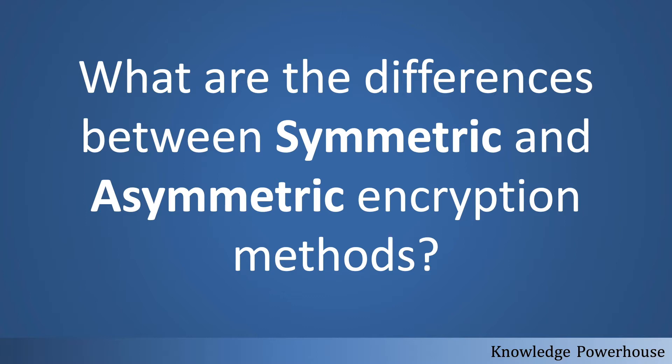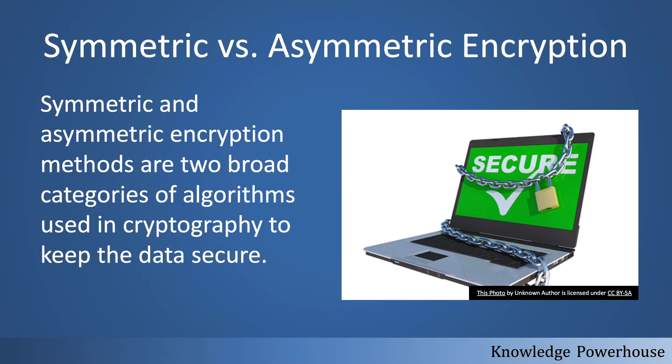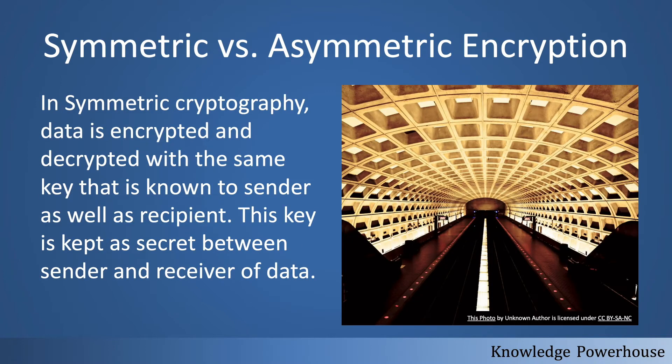Symmetric and asymmetric encryption methods are two broad categories of algorithms. This is not just one method — it's a category of algorithms, and different kinds of algorithms exist within each. Both categories are used to make data secure.